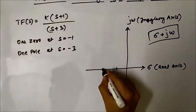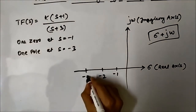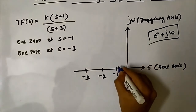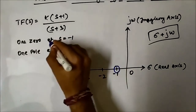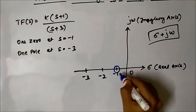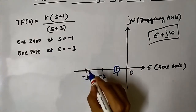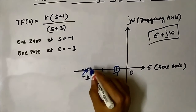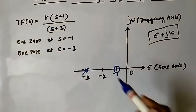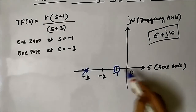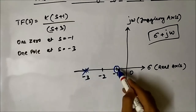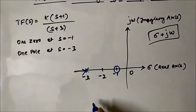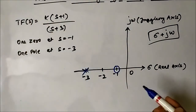So here we have to locate the poles and zeros. The zeros are located by encircling that point — the zero is at s equals minus 1, so we simply encircle it. The poles are marked by putting a cross sign. So in this transfer function, the zero at s equals minus 1 is encircled, and a cross is placed at s equals minus 3. This is the required pole-zero plot of this transfer function.